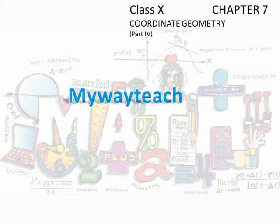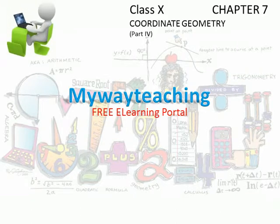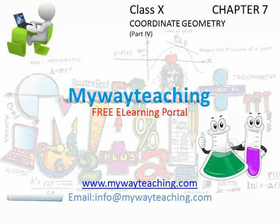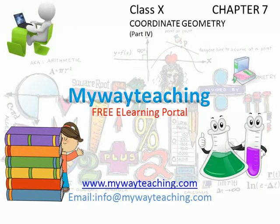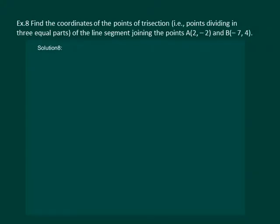Hello friends. Let us read the question: find the coordinates of the point of trisection of the line segment joining point A, whose coordinates are (2, -2), and point B, whose coordinates are (-7, 4).